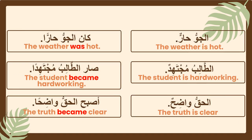Now let's compare sentences which use كان وأخواتها to nominal sentences. Nominal sentences have two parts: the first part is مُبْتَدَأ and the second part is خَبَر. But if كان وأخواتها enter the sentence, مُبْتَدَأ will change to إسْمُ كَانَ. For example, in كَانَ الجوُّ حَارًا: الجو is إسمُ كَانَ, and حَارً will change to خَبَرُ كَانَ. Another example: الطالب مُجْتَهِدٌ — الطالب is مُبْتَدَأ and مُجْتَهِدٌ is خَبَر. If صار enters the sentence, الطالب changes to إسمُ صَارَ and مُجْتَهِدًا changes to خَبَرُ صَارَ.